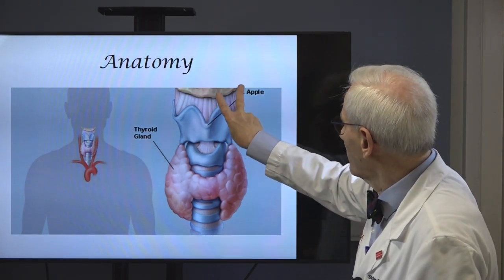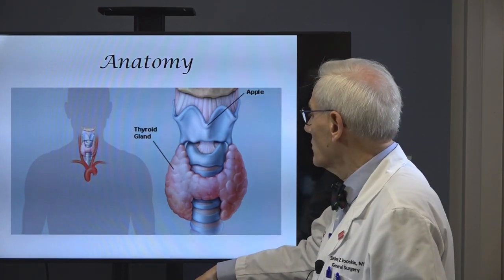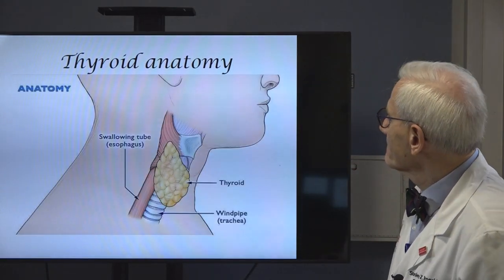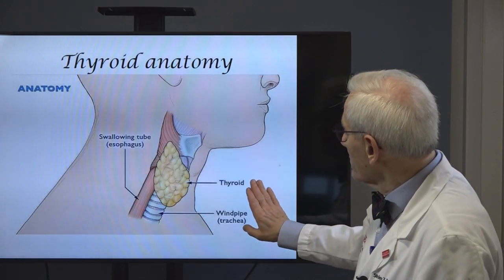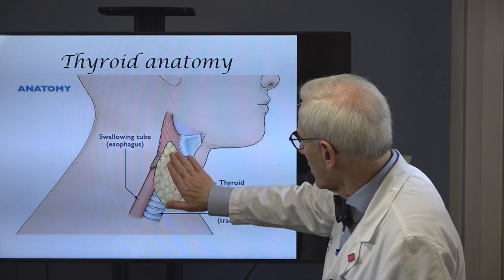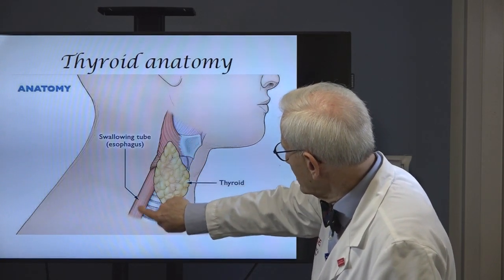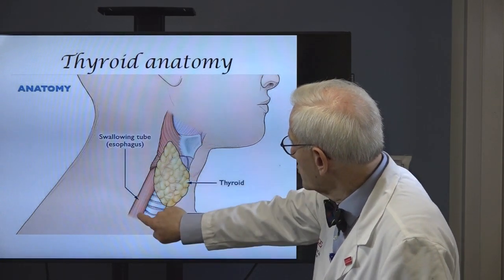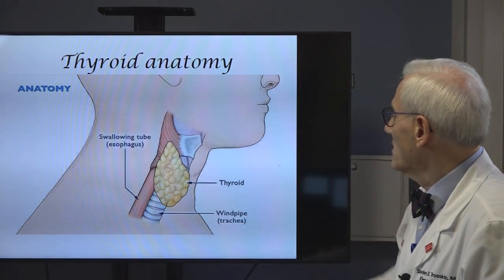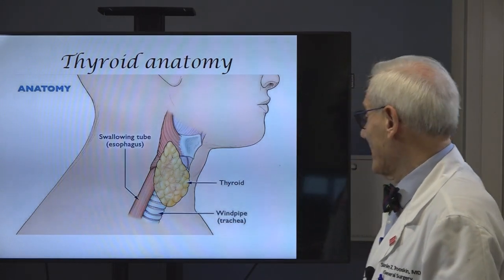Air will go down into the lungs. Now if you looked at it from the side, you can see the normal thyroid gland is around the trachea. This is the swallowing tube, the esophagus, and the thyroid gland is always on it.